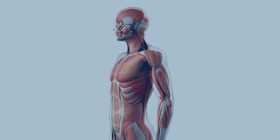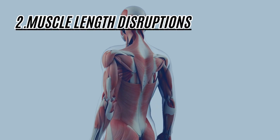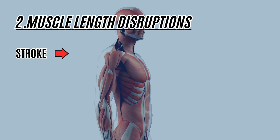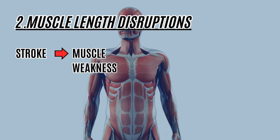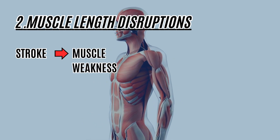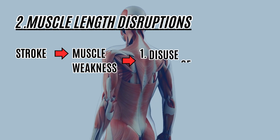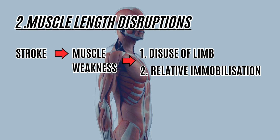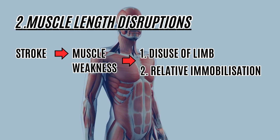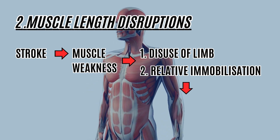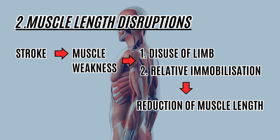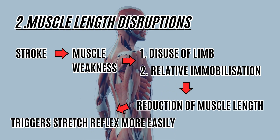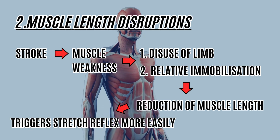Now let's look at reason number two, which is muscle length disruptions. When a lesion or stroke happens in the brain, there will be some muscle weaknesses happening in the body. This will lead to two things: first is disuse due to the weakness, and second is relative immobilization due to the weakness. Both of these will cause a reduction of the muscle length of the affected muscle, and this may trigger the stretch reflex more easily as the muscle is shortened.